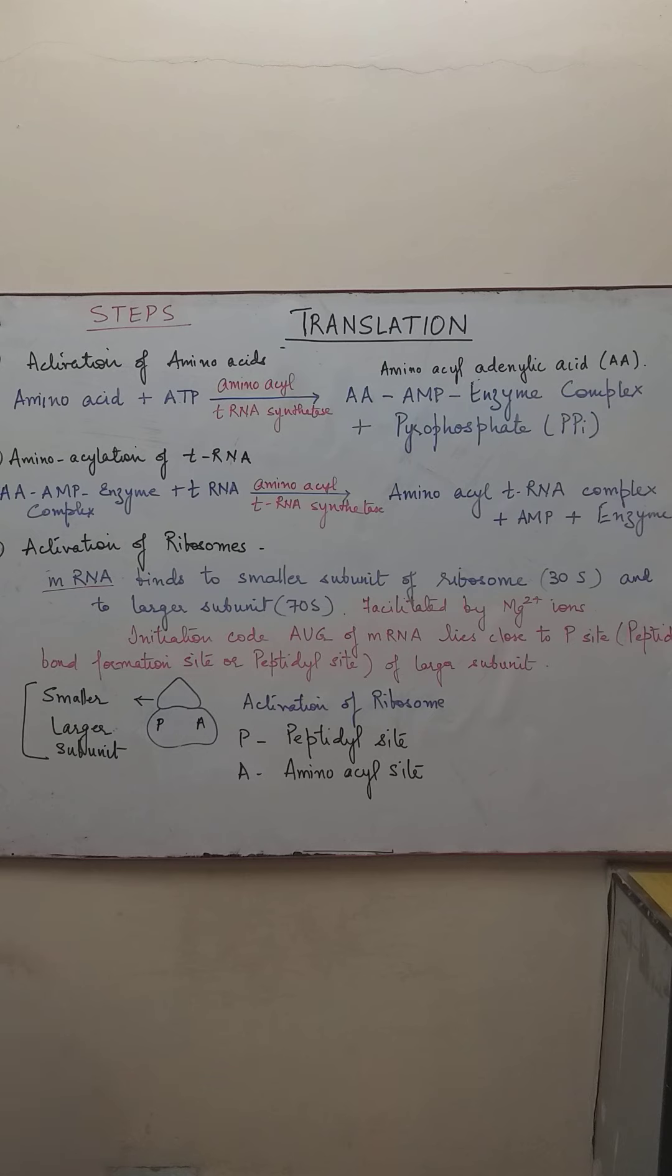As a result, the two subunits join. The smaller subunit and larger subunit are joined with the mRNA. This joining is in such a way that the initiation code AUG of mRNA, that is the genetic code, it has AUG functioning or serving two purposes. It is coding as an initiator code for the protein synthesis. Also, it codes for methionine in case of eukaryotes. That is, it is functioning dually. This genetic code of mRNA lies close to the P site.